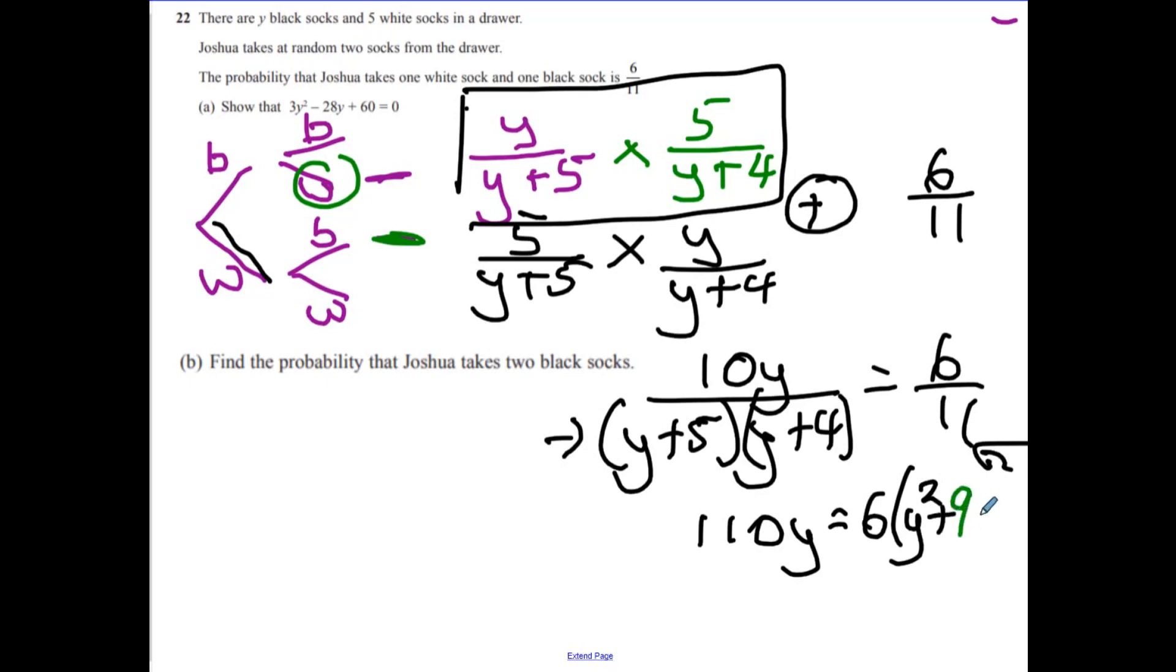Write that in properly. I have no idea why that's just turned to green. And plus 20, just there. Right, multiply that out. I've got a little bit more room, a little bit squeezed in there. And then that equals, so what are we going to get? We're going to get 6y squared plus 54y, and that was 20, so that'd be 120.